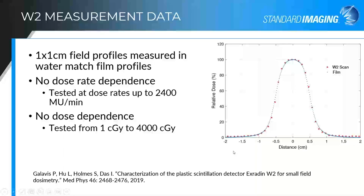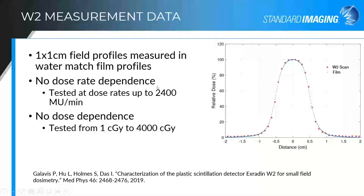From an early publication on the W2, a comparison was done between water tank scanning and GAF chromic film measurements for a 1 cm field. The W2 measurements showed excellent agreement with the film scan. They also verified that, just as with the W1, there were no dose rate dependencies seen up to 2,400 MU per minute and no dose dependencies seen from 1 cGy to 4,000 cGy.